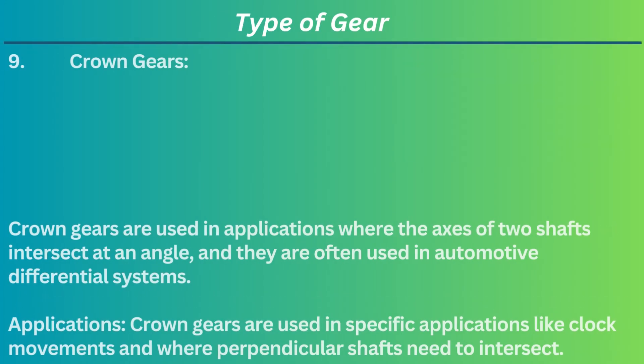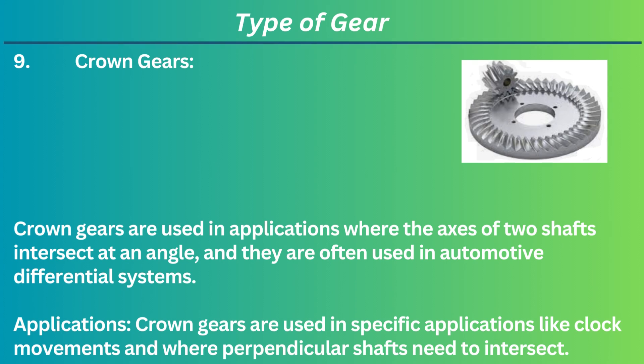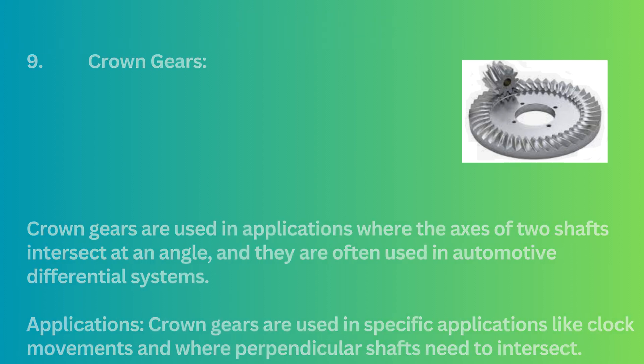9. Crown gears. Crown gears are used in applications where the axes of two shafts intersect at an angle, and they are often used in automotive differential systems. Applications: Crown gears are used in specific applications like clock movements and where perpendicular shafts need to intersect.